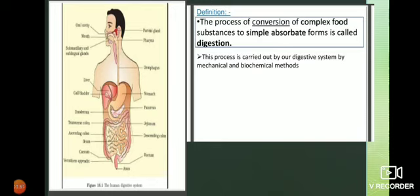In our body there are many organs like liver, kidney, lungs, stomach and so on. But not all organs participate in the digestive system. Some organs participate and some do not - for example, the eye has nothing to do with the digestive system. So first we will look at the organs that have a role in digestion.